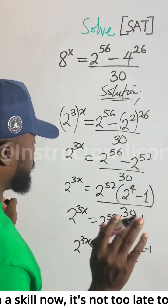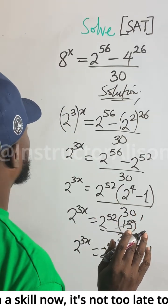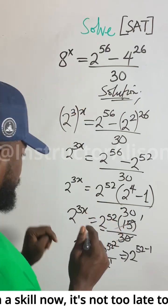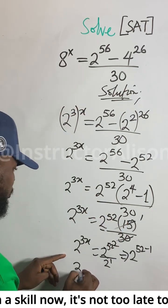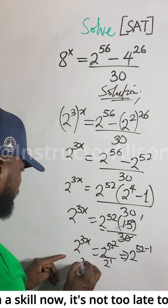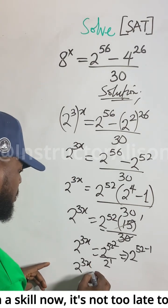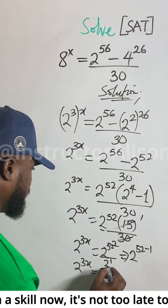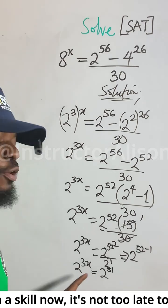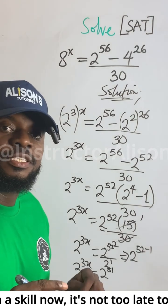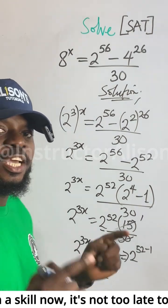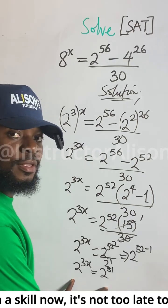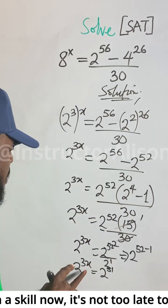So the whole thing we're going to write now: we can write 2 to the power of 3x equal to 2 to the power of 51.